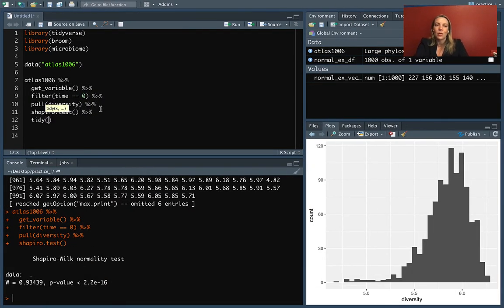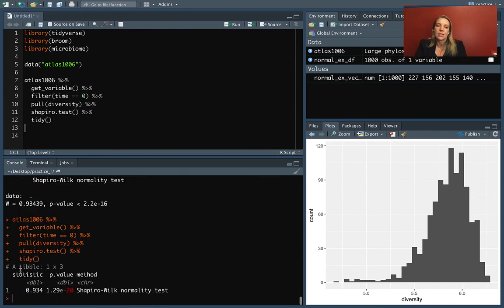And then the last step we can do to get this in a format we could work with more easily later, we can use the tidy function. That will let the output that we get from this be in a tibble that's easier for us to use later. Now we've got the p-value and the test statistic and the information about the method, but now it's in a tibble where we know how we can work with this data in the next steps we might want to do.